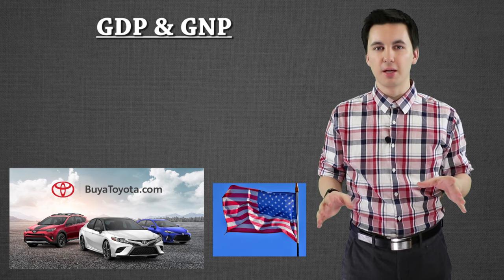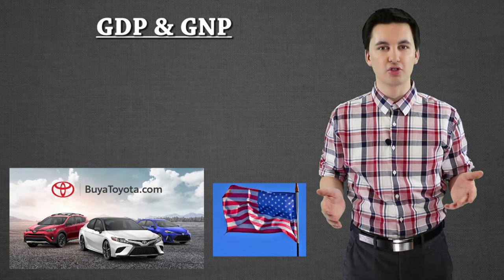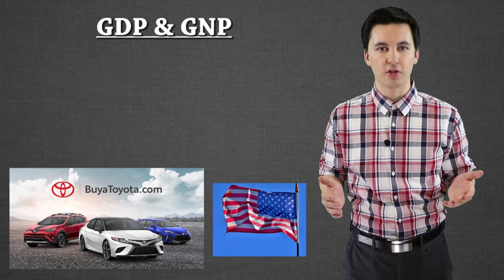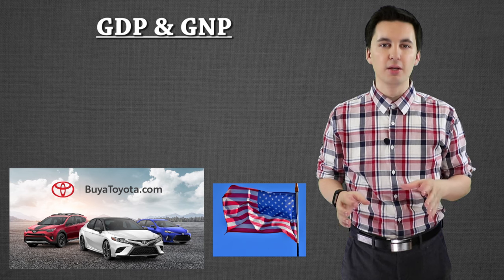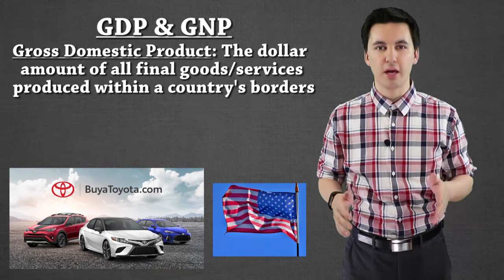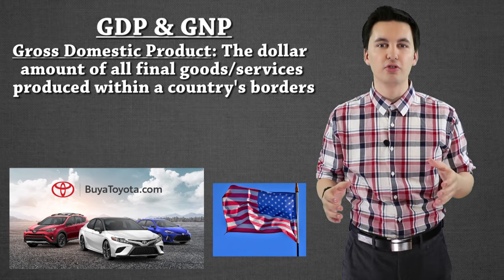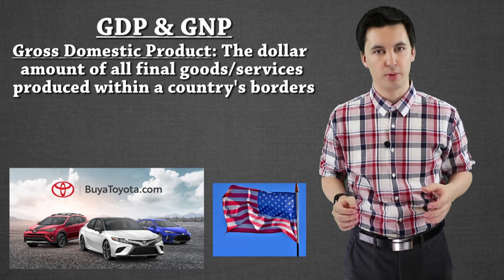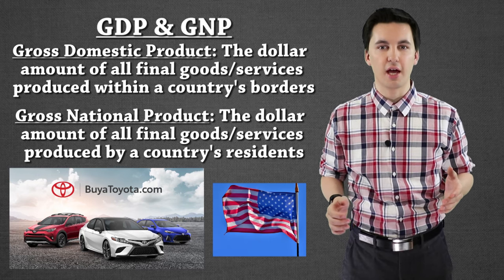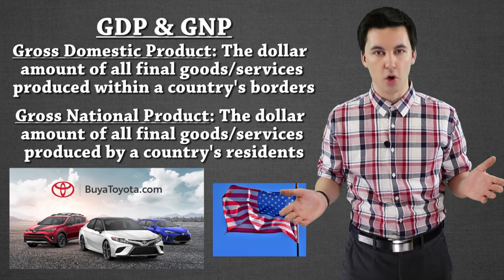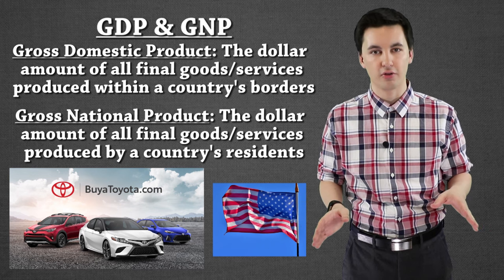Now GDP and GNP are pretty similar, so when we're calculating out the numbers we're actually going to get numbers that are pretty close, but there's a big difference. GDP is looking at our gross domestic production, and what we're focusing on here is goods that are produced inside a country's borders. GNP is looking at everyone who would be a citizen of the country, regardless of where it's made.